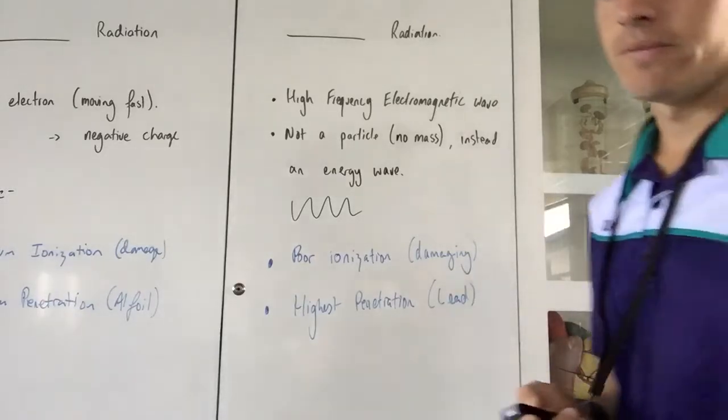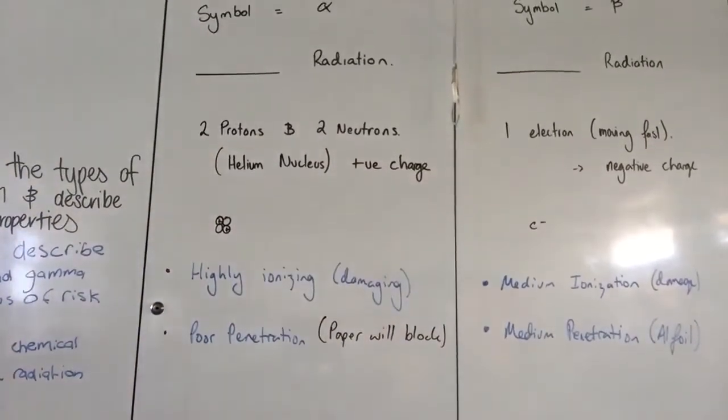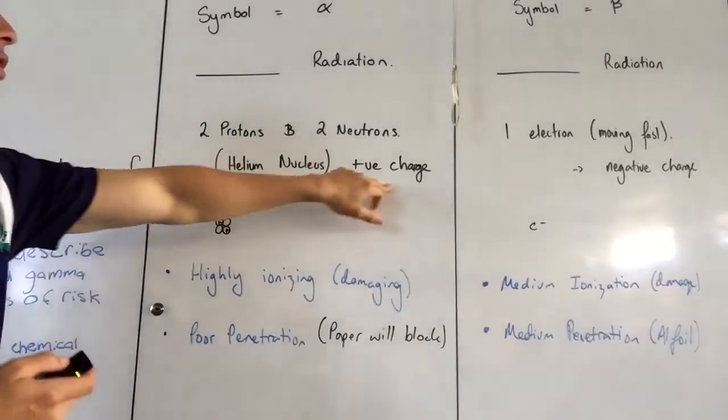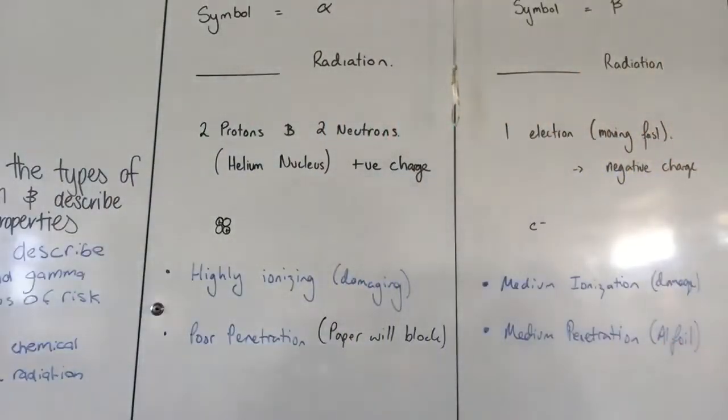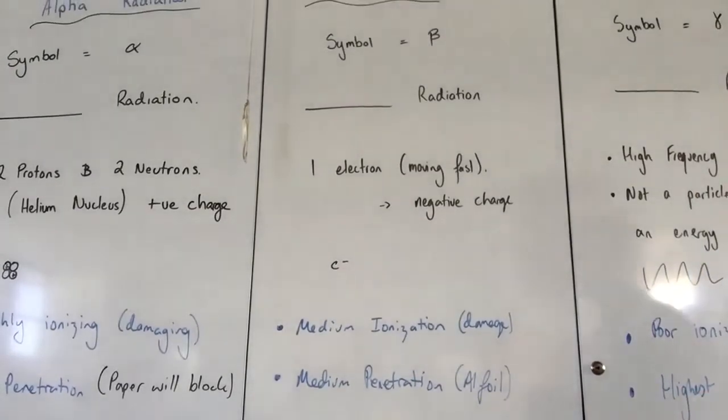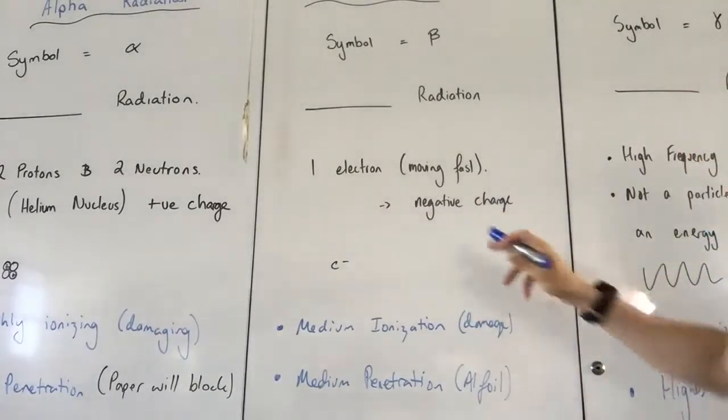So just to summarise, there are three types of radiation: alpha, beta and gamma. Alpha is the most damaging but the least penetrative. And it's made up of two protons and two neutrons with a positive charge. Beta radiation is the medium. So it's got a bit of... It's both penetrative and damaging. But it's sort of in the middle for both. It's given the symbol beta, which is like a bee with a tail. It is an electron moving very quickly with a negative charge.